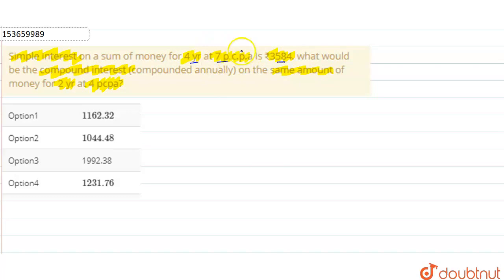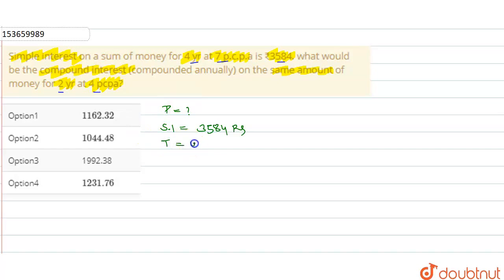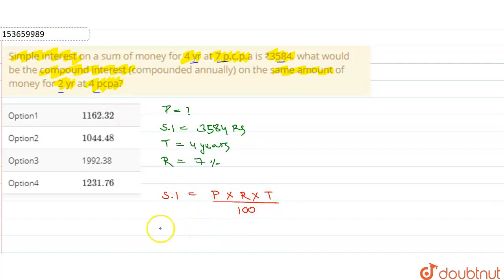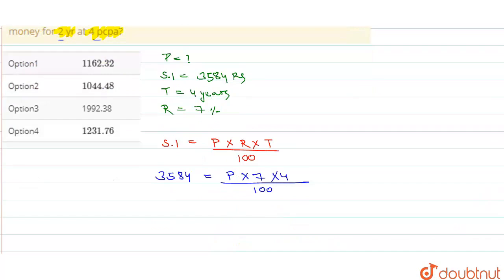अगर हम इसी principal amount पे compound interest calculate करते हैं at 2 year, 4% rate of interest पे, तो हमारा interest कितना आएगा। तो solve करते हैं। First case में हमें principal given नहीं है, तो principal find out करना है। हमें simple interest given है that is 3584 rupees, time period given है 4 years, और rate of interest given है 7%. तो interest से principal निकाल सकते हैं। Simple interest का formula है: SI = Principal × Rate × Time ÷ 100. तो इसमें value substitute करके principal निकालते हैं — 3584 = P × 7 × 4 ÷ 100.